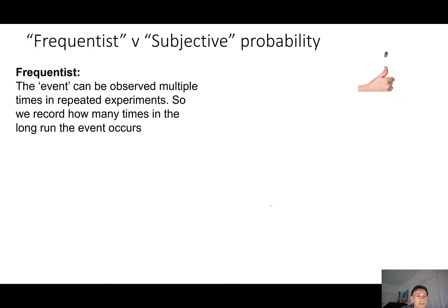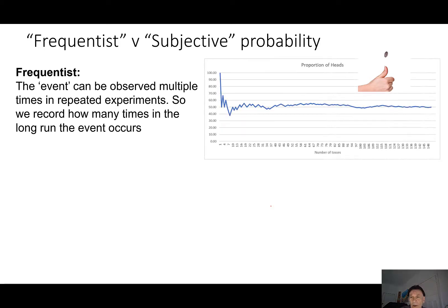But it turns out there's a different approach, a frequentist and subjective approach to probability. With the frequentist approach, the assumption here is that the event that we want to get the probability of can be observed multiple times in repeated experiments like tossing a coin. So we record how many times in the long run the event occurs. So if we continually toss a coin and record the proportion of heads, then it might converge. If it converges on 50%, then we deduce that there's a probability of 0.5 of tossing a head. So that's where we get our 0.5.